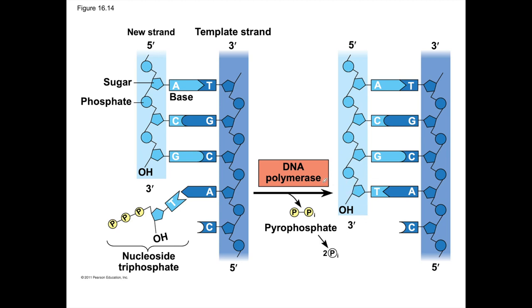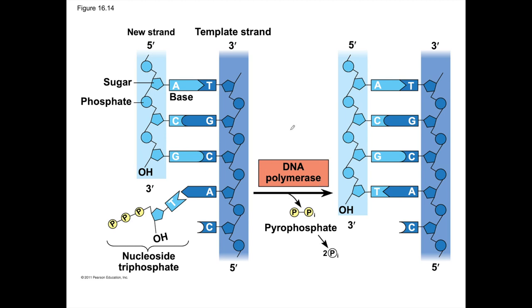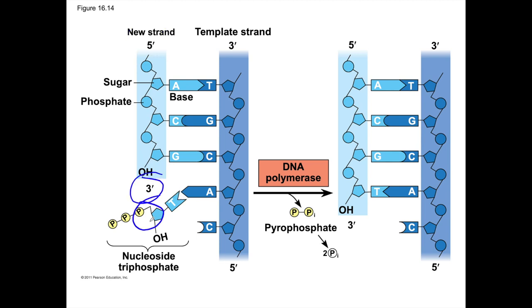DNA polymerase can only build new DNA in one direction: from 5' to 3'. The reason is that this enzyme cannot add new nucleotides to the 5' end — it physically can't. It can only add new nucleotides to the 3' end. So if you keep adding nucleotides to the 3' end, you're building the DNA from 5' to 3'. New DNA always grows from 5' to 3', or equivalently, you can only add new nucleotides to the 3' end of the growing DNA strand.